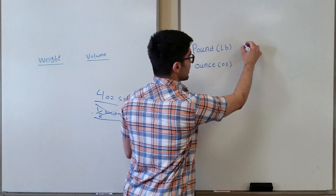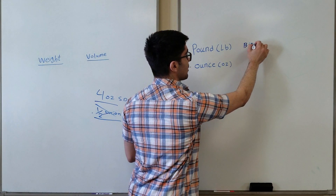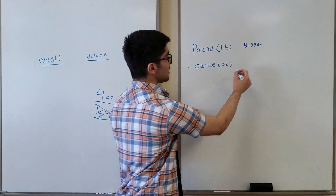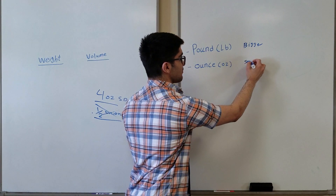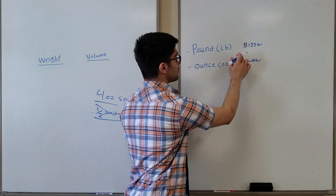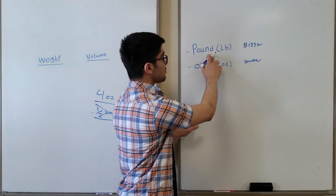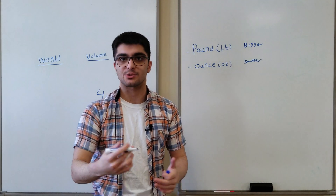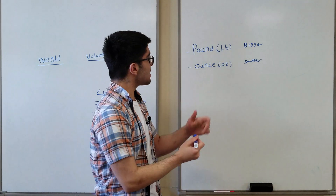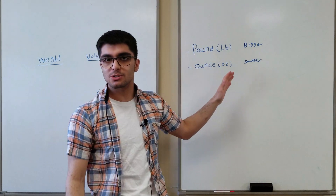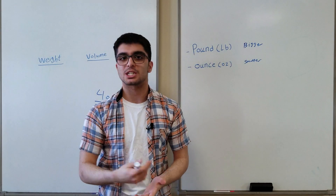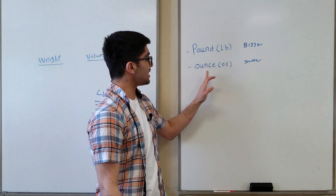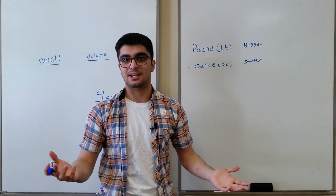A pound is basically bigger, and we would use pounds for heavier ingredients. An ounce is basically smaller — smaller than a pound — and we would use ounces for lighter ingredients. An example: three potatoes, three apples, three oranges, or three bananas is roughly a pound. But an example of an ounce: basically one slice of bread is an ounce.